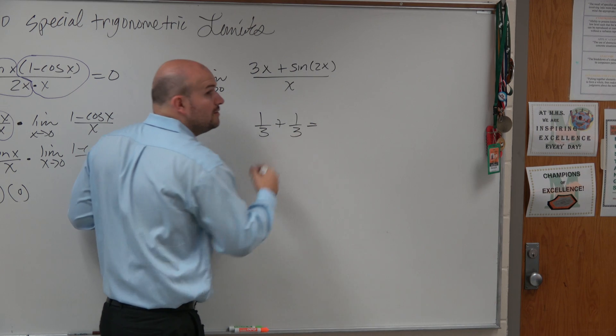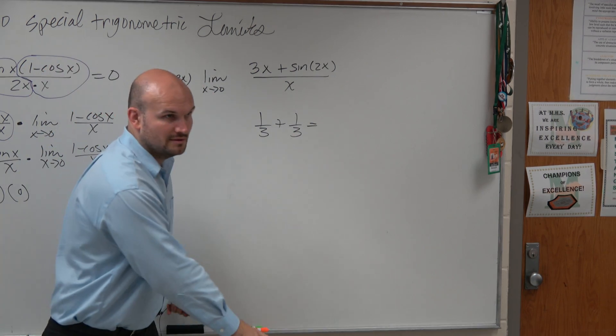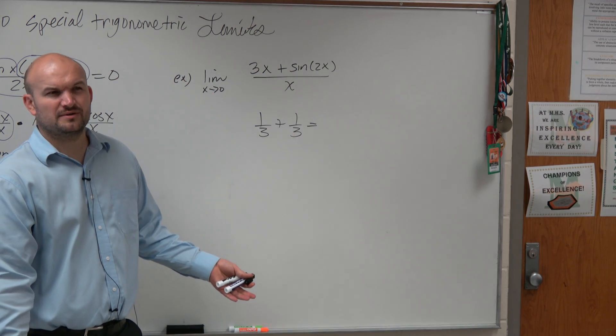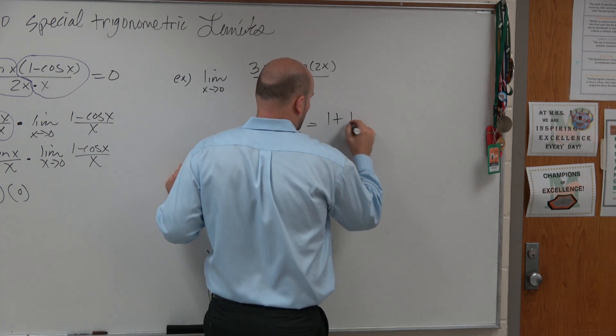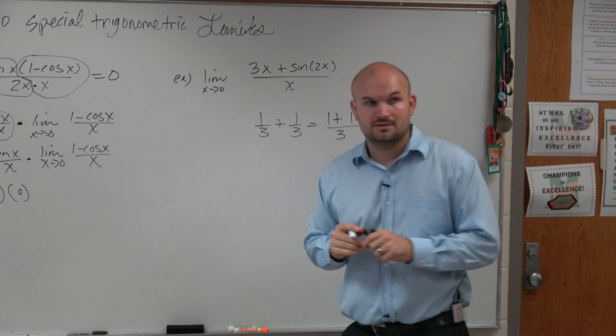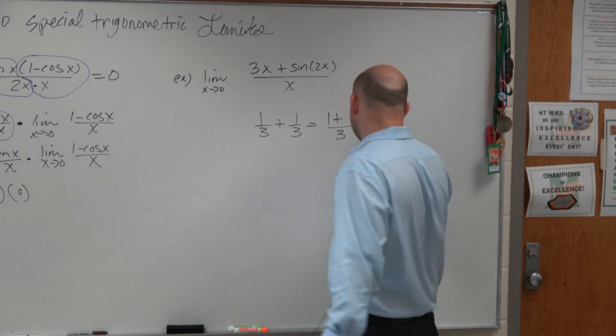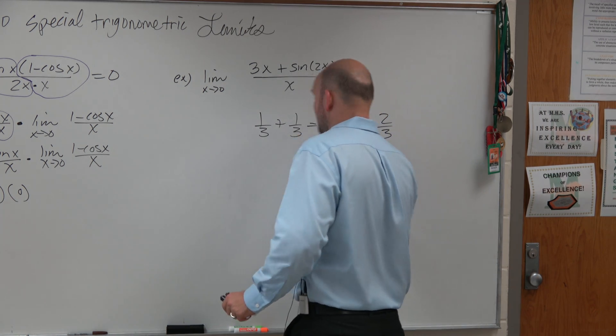1 third plus 1 third is equal to? How'd you do that? What'd you do? Right, what you did is you did 1 plus 1 over 3. Right? And that equaled 2 thirds. Yes?